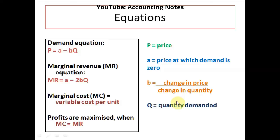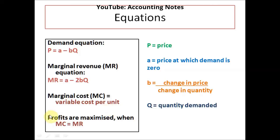So these are the equations that we will be using to find the best selling price. The demand equation is P equals A minus BQ. Marginal revenue is A minus 2BQ, which simply doubles the B from the demand equation. The marginal cost is the variable cost per unit, and profits are maximized when MC equals MR. P is the price, A is the price at which demand is zero, B is calculated by taking change in price divided by change in quantity, and Q is the quantity demanded.